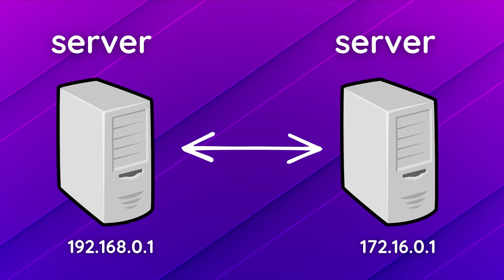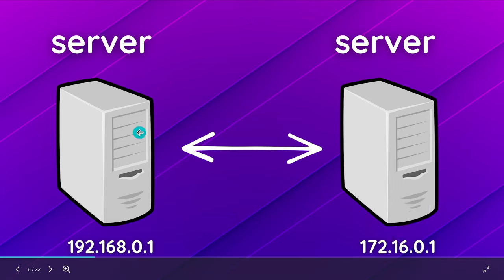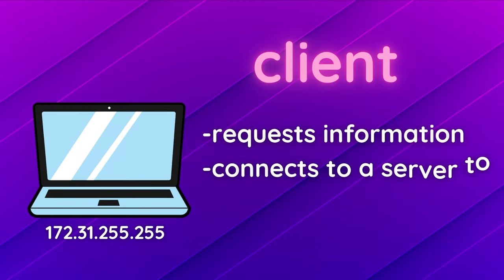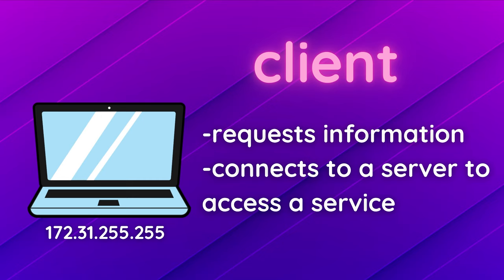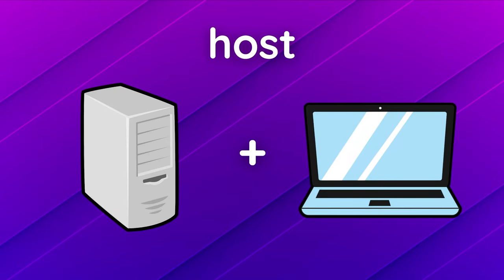The internet is essentially a whole conglomeration of servers communicating with each other and passing information from one server to another. Each server has an IP address, which is a unique identifier for that device on the network. If one server wants to communicate with another, it needs to know the other server's IP address. A client requests information from a server to access and use it, and a client also has an IP address. There's also a host, which is a server and client combined, making testing much easier since you don't need to spin up a separate server instance.